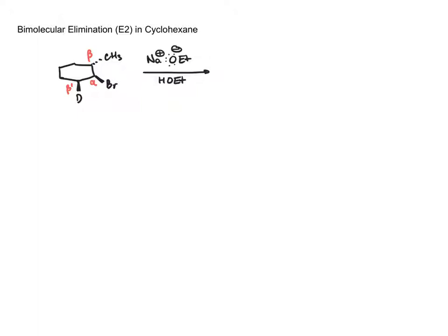To effectively solve this problem we have to convert this flat cyclohexane into a chair. The reason we have to do that is because the proton that is being abstracted by sodium ethoxide, which is the base, has to be in a 180 degree dihedral angle to the leaving group, which is the bromide.